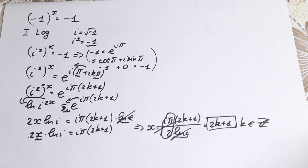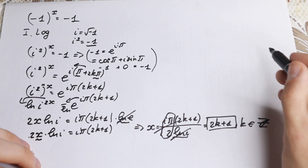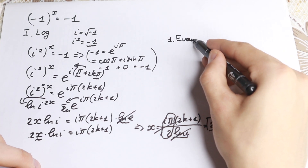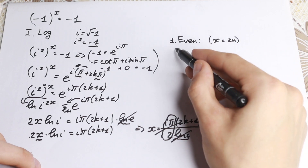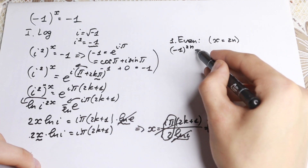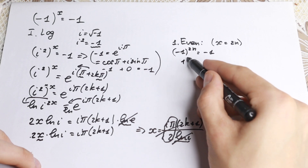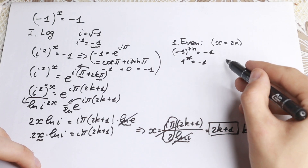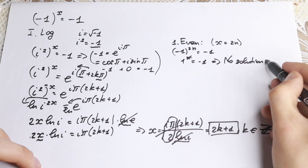A lot of students may already know this from school, but let me show it from the complex number side. Note that 2k+1 is an odd number. Let's verify by checking even numbers first. If x equals 2n — an even number — then minus one to the power 2n equals (minus one squared) to the power n, which equals 1 to the power n, which equals 1. That does not equal minus one, so there is no solution when x is even.